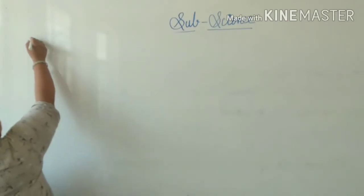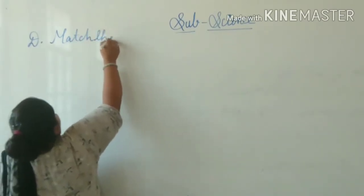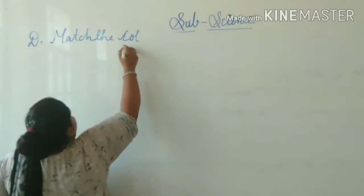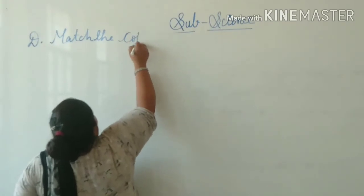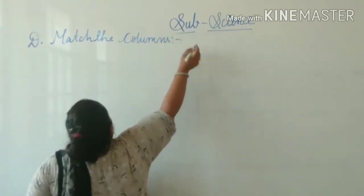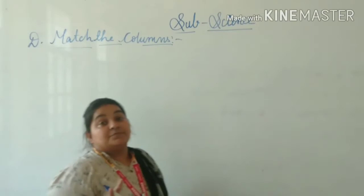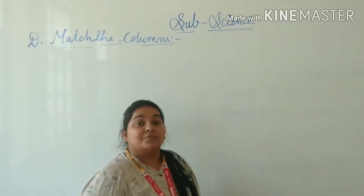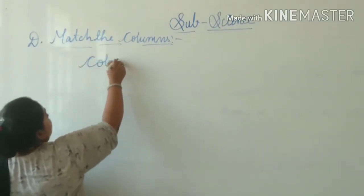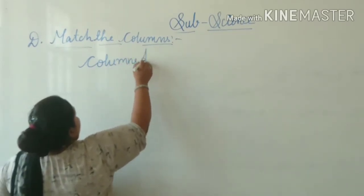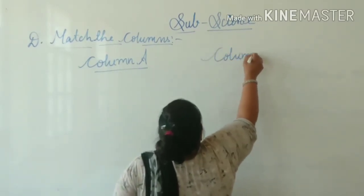So, write down. Number one: the topic — match the columns. In this match the columns, we have two columns, and we are going to match up column A with the right answer in column B.